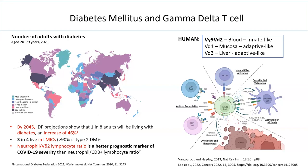Gamma delta T cells can bridge these by orchestrating the immune response from the beginning of infection by producing pro-inflammatory cytokines. They also help create memory cells, which can provide longer-lasting protection and can usually be recalled by vaccinations.